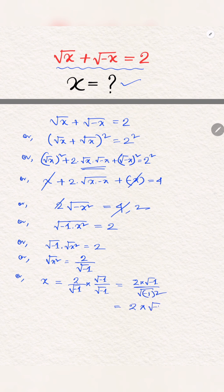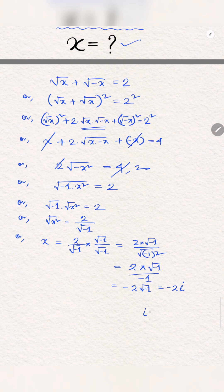The denominator root over -1 squared, so this will be -1, so we get this result: 2i. i is iota in the complex number and the value of i is root over -1. So the result is x equals -2i.